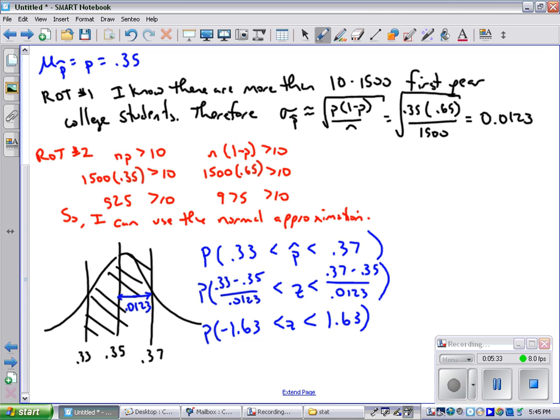And now I can either look these numbers up on my pink chart or I could use the function on the calculator. If you use the pink chart, it's going to be 0.9484 minus 0.0516, which is 0.8968. If you use the normal CDF function on your calculator, you'll get something really close to that.